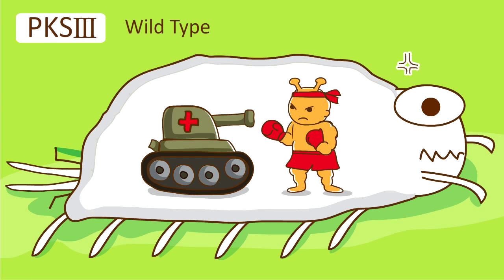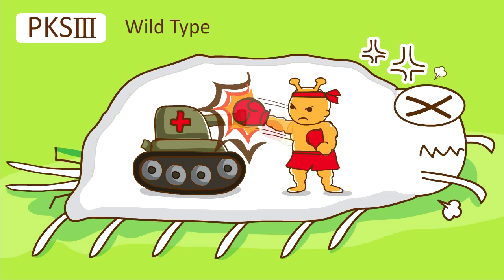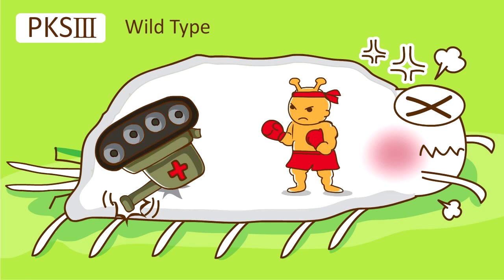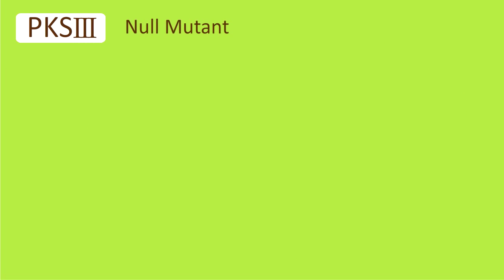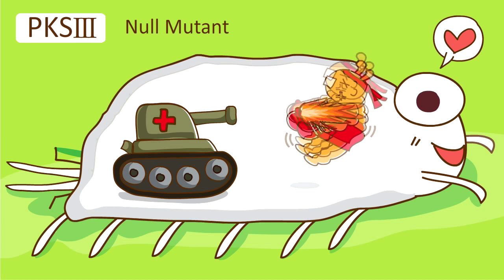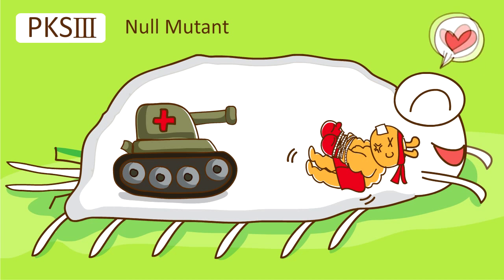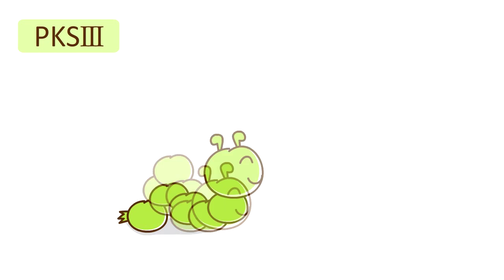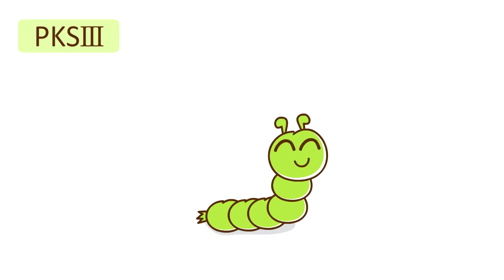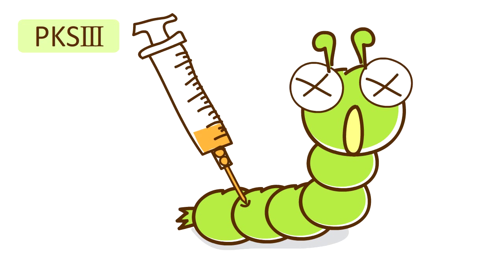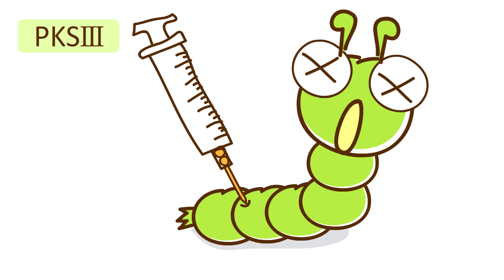Fungal PKS3 presumably acts to cope with the insect immune response. In the wild type, the fungus can overcome the insect defense and the infected insect dies. The PKS3 null mutant, in which this polyketide synthase is not working, cannot cope with the insect immune response, so the insect remains healthy. We determined insect virulence between Beauveria wild type and the PKS3 null mutant using intra-hemocelic injection of fungal spores.